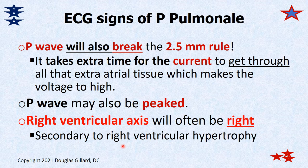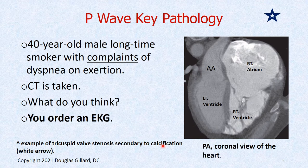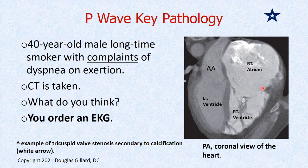Can you think of a situation where you'd have right atrial hypertrophy without right ventricular hypertrophy? How about tricuspid stenosis — the beaver dam is just downstream from the right atrium. Let's look at this 40-year-old male smoker with complaints of dyspnea on exertion. A CT scan was taken. Look at the right atrium — this is a coronal view. You can see the right atrium is bigger than the right ventricle. We've got calcification on one of the tricuspid cusps — so this is someone with tricuspid stenosis.